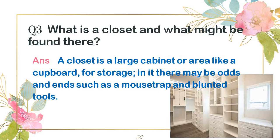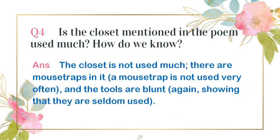Third question: what is a closet, and what might be found there? If you have read last time, what is a closet here — it is what we can say a cabinet or cupboard. Our closet is a large cabinet or like a cupboard used for storage. In it there may be odd and ends such as a mouse trap and blunted tools.